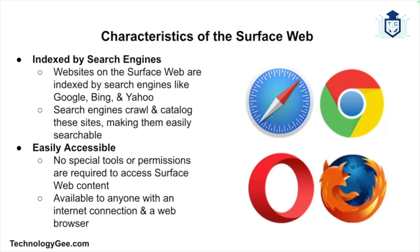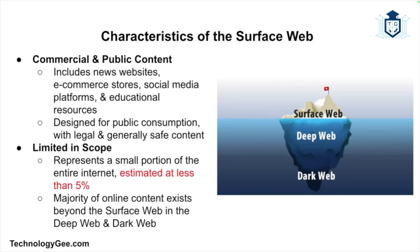The first characteristic of the surface web is that it is indexed by search engines. Search engines have crawled these websites, cataloging their content so they can be found through search queries. The surface web is also easily accessible to anyone with an internet connection and a web browser — no special tools or permissions are needed. It primarily consists of commercial websites, news sites, social media platforms, online stores, and public information.